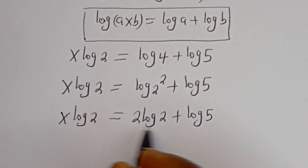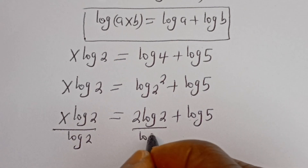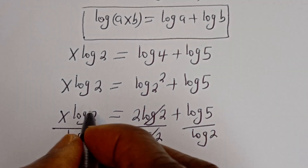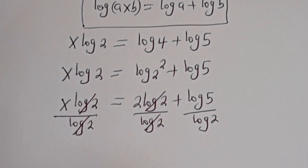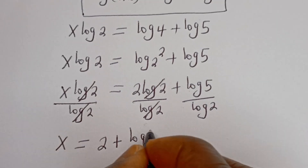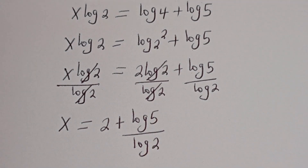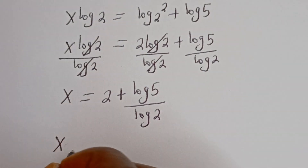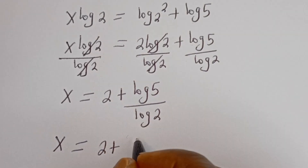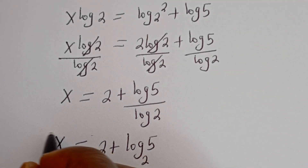Let's divide all through by log 2. Each term is divided by log 2. Then s is equal to 2 plus log 5 divided by log 2. And log 5 divided by log 2 can be written as log 5 base 2, so s equals 2 plus log 5 base 2. This is the final answer.